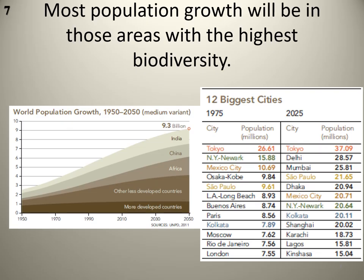Importantly, most population growth in the future is going to be in these areas with the highest biodiversity. Why does biodiversity need conserving? Because there's going to be an inevitable increase in human-environment interaction in the future — but the good news is we can shape what that looks like. A population growth projection from 1950 to 2050 shows not much growth in the developed world — it's the developing world where population growth is occurring.